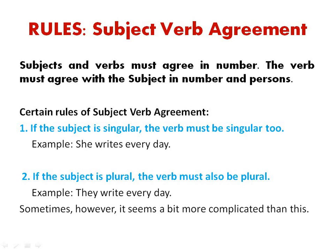Subjects and verbs must agree in number. The verb must agree with the subject in number and person. For example, 'she writes every day.' The first rule says that if the subject is singular, the verb must be singular too — 'she' being the subject is singular, hence the verb should also be singular: 'writes every day.' Similarly, if the subject is plural, the verb must also be plural.